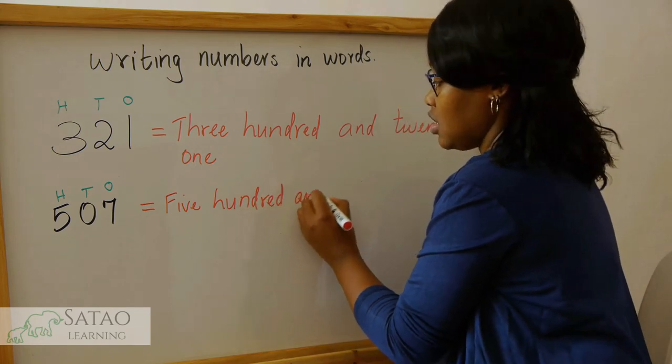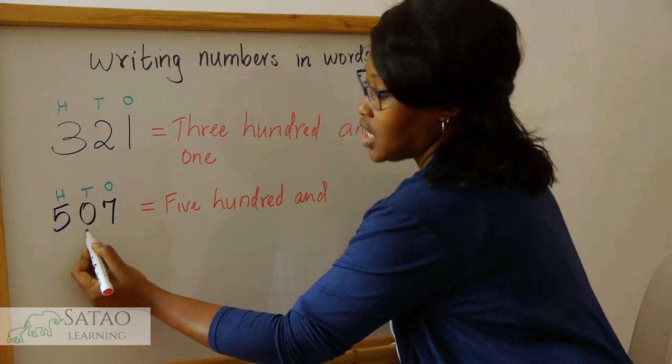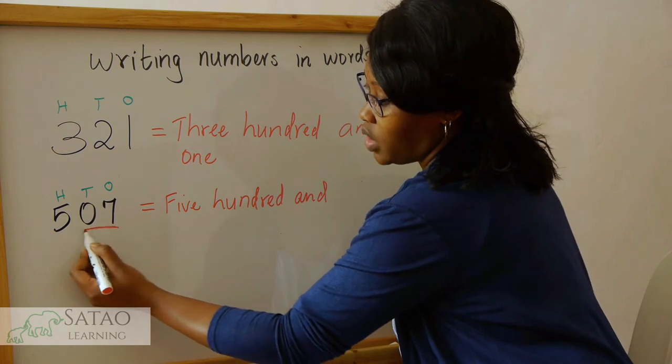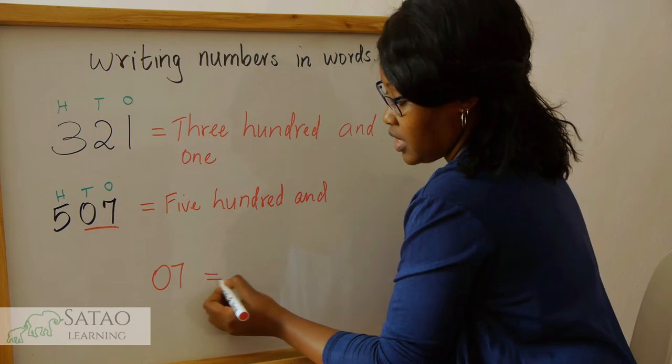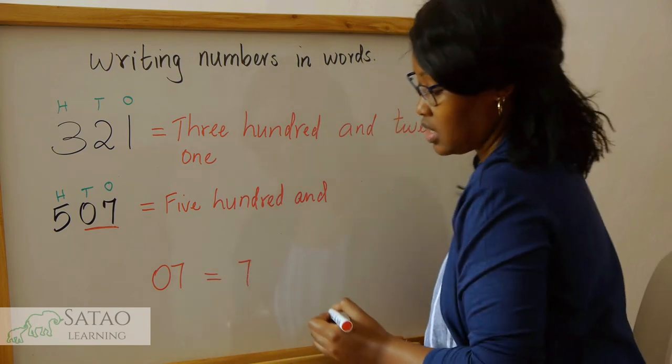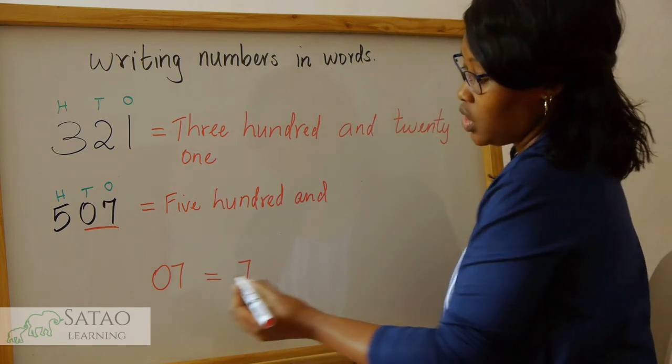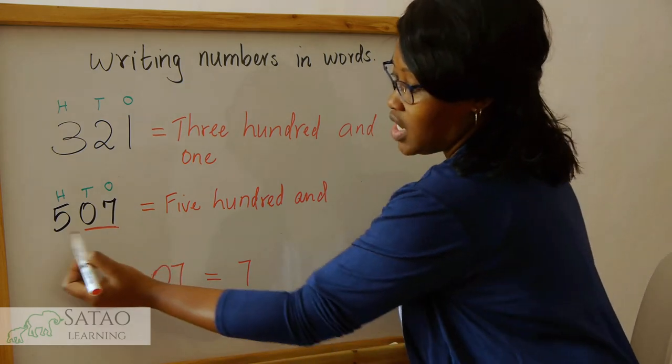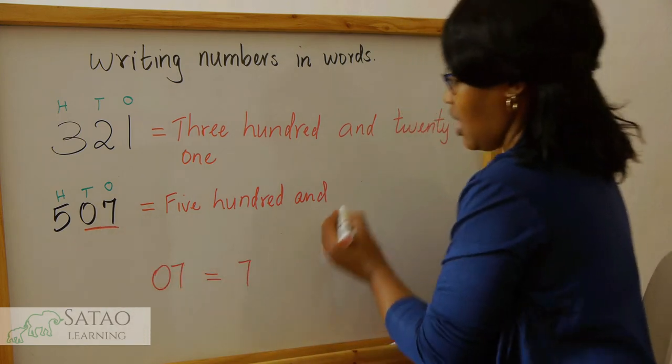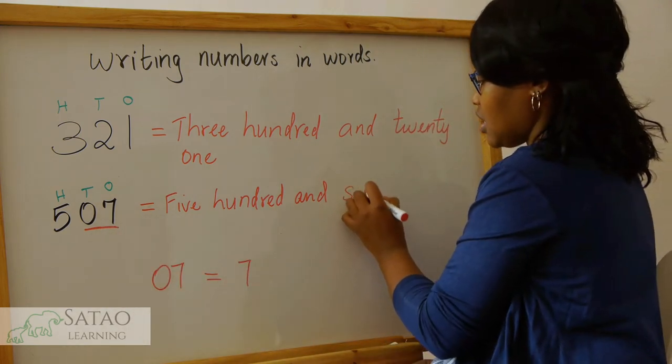And now we read the last two numbers together. So what number is that? If you have a number like that, it's the same as 7, because we don't normally say zero seven when there are three numbers. We say five hundred and seven, five hundred and seven.